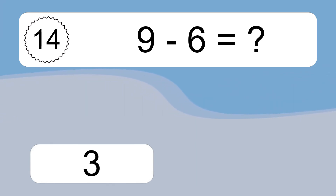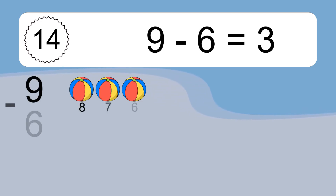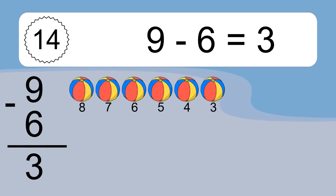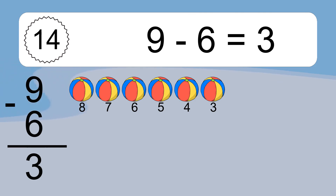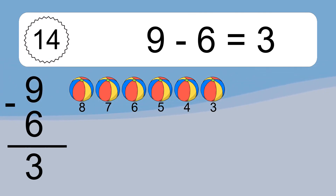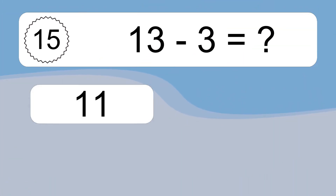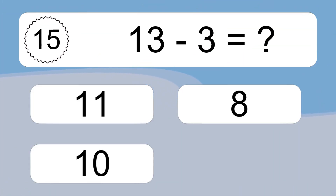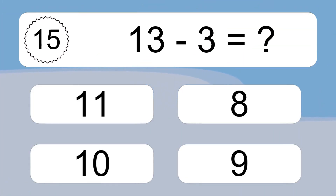9 minus 6 equals what? 9 minus 6 equals 3. Let's count it: 8, 7, 6, 5, 4, 3.